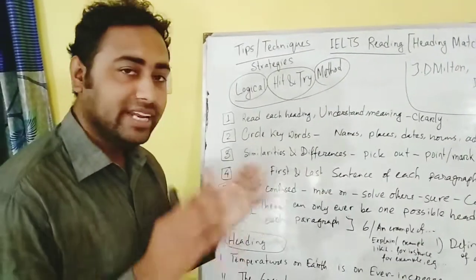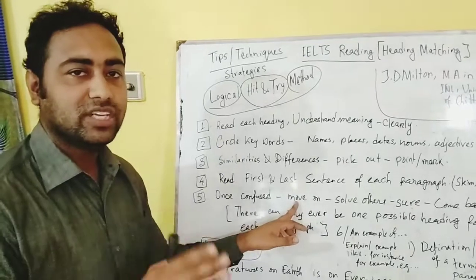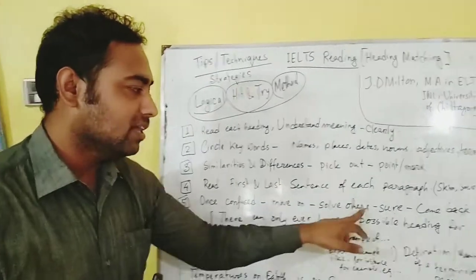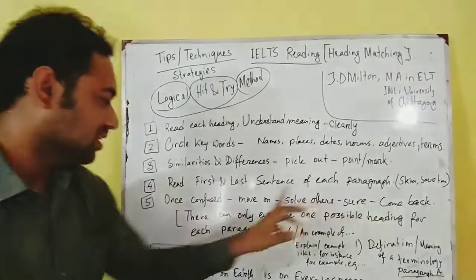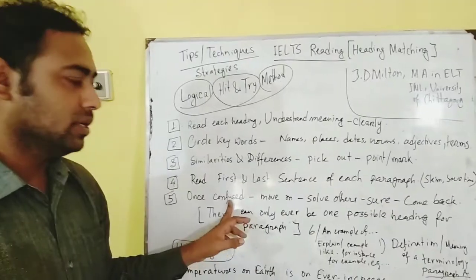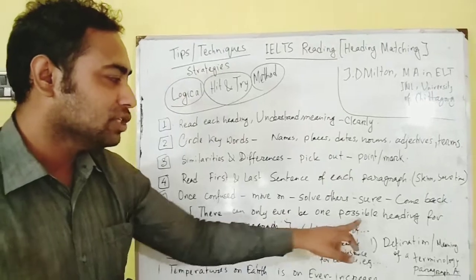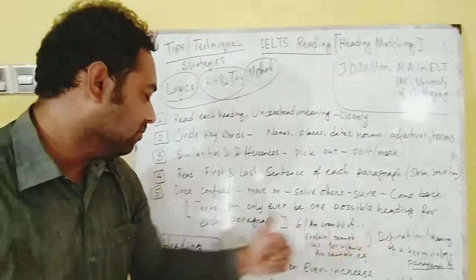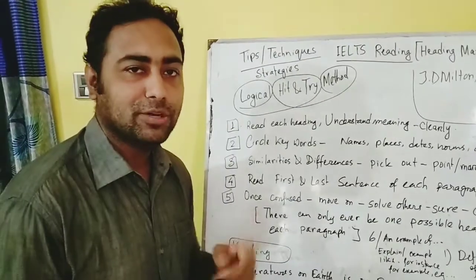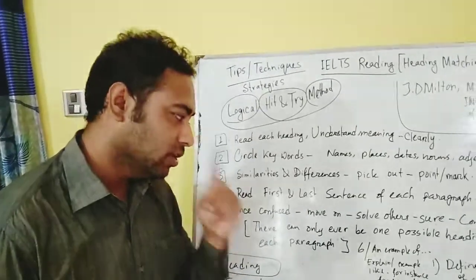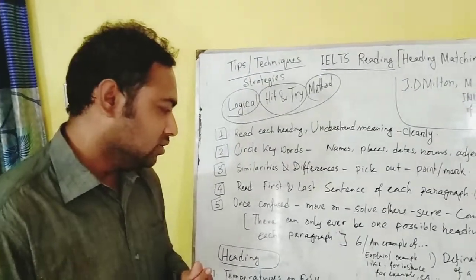Number five: if confused with any heading or paragraph, move on — don't waste your time. Solve the ones you are sure about and then come back to the confusing one. Remember, there can only ever be one possible heading for each paragraph. There is no possibility of two headings for one paragraph.